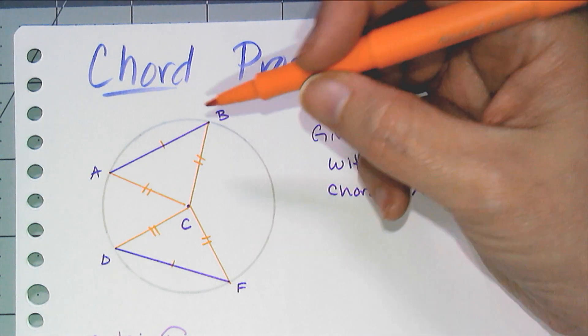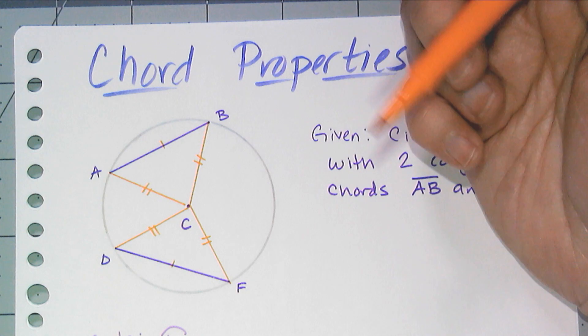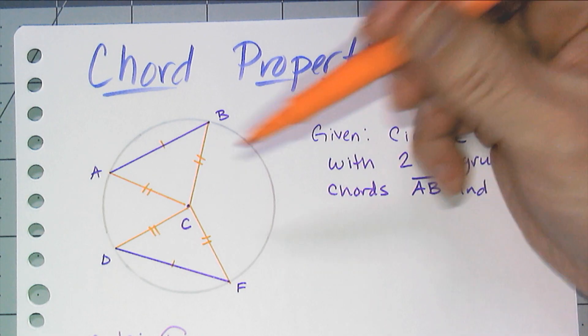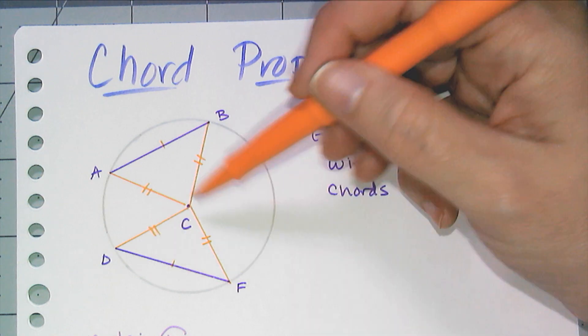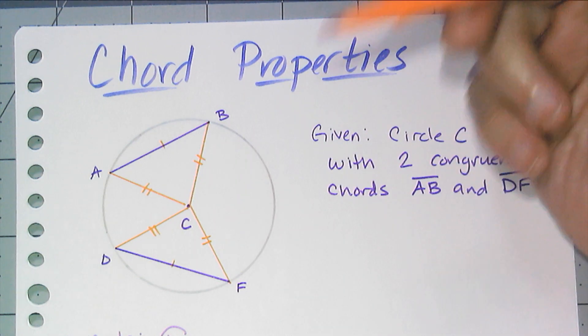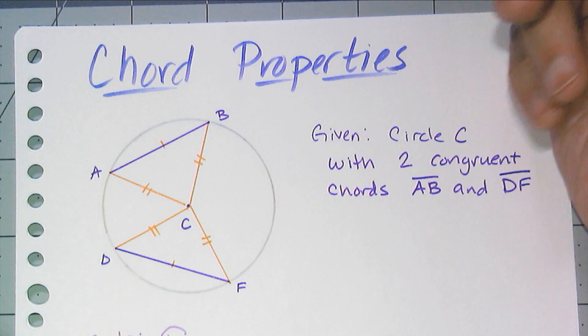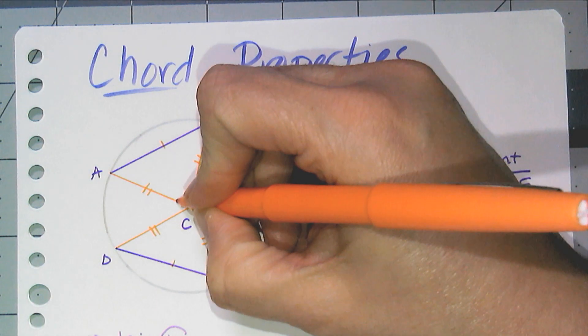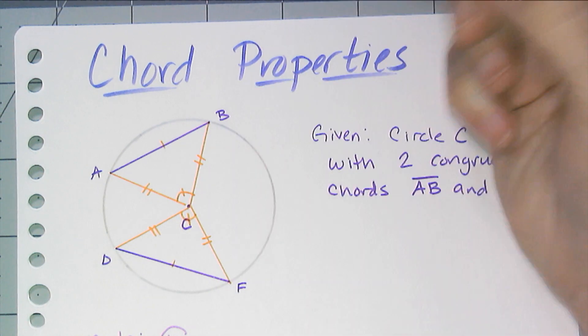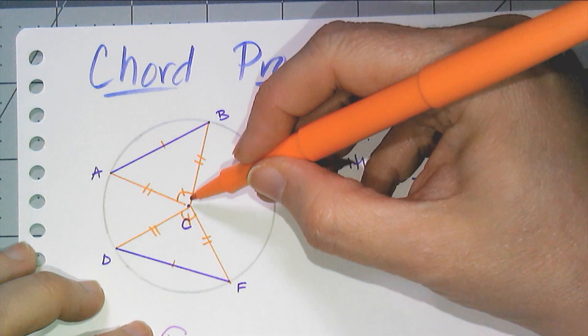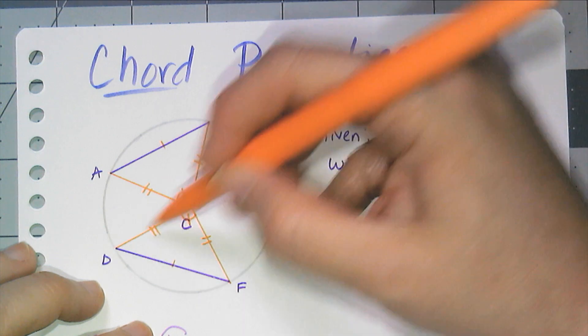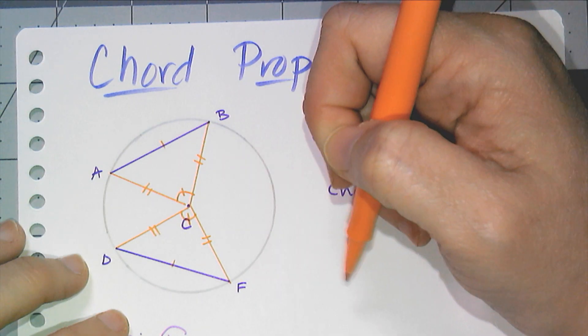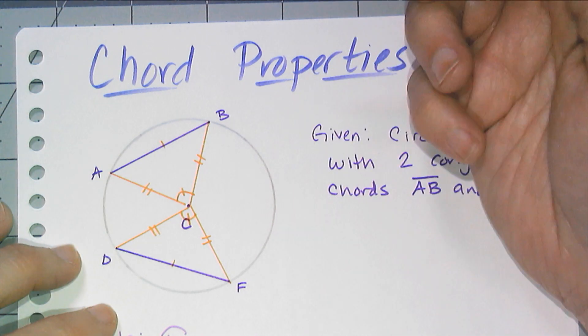And those chords AB and DF were congruent. And that means that I have two congruent triangles. ABC and DCF are congruent triangles. And because they're congruent triangles, I know a whole bunch of stuff about them. I know that this angle is congruent to that angle there. Because ACB and DCF are both vertex angles of these isosceles triangles. So they're corresponding parts of congruent triangles and therefore congruent.